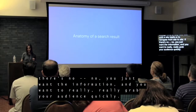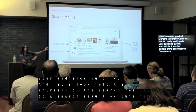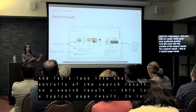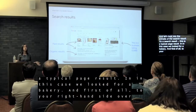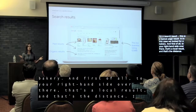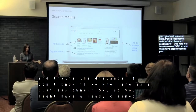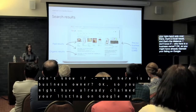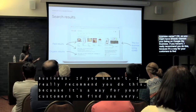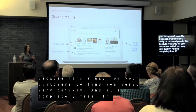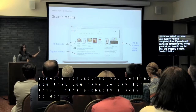Let's look at the anatomy of a search result. In a typical search for a bakery, you'll see a local result on the right — that's a Google My Business listing. If you're a business owner and haven't claimed your listing on Google My Business, I really recommend you do: it's a great way for customers to find you quickly, and it's completely free. If someone tells you that you have to pay for it, it's probably a scam.